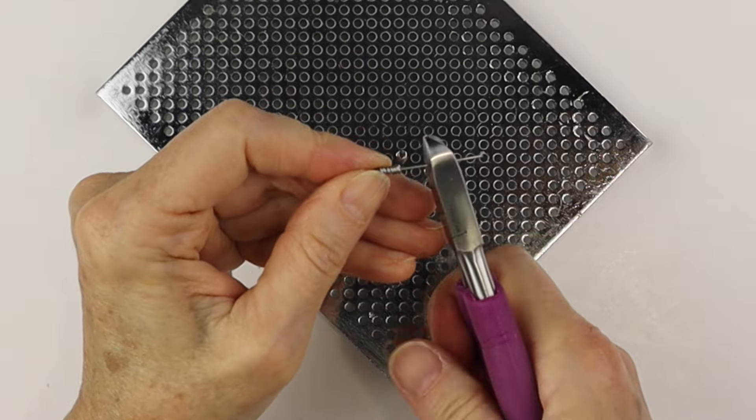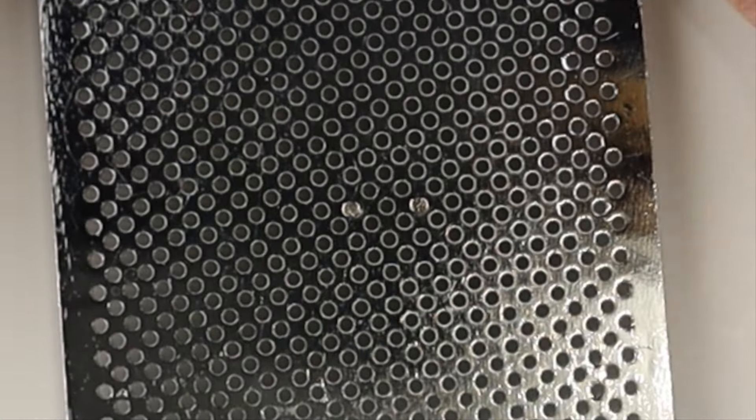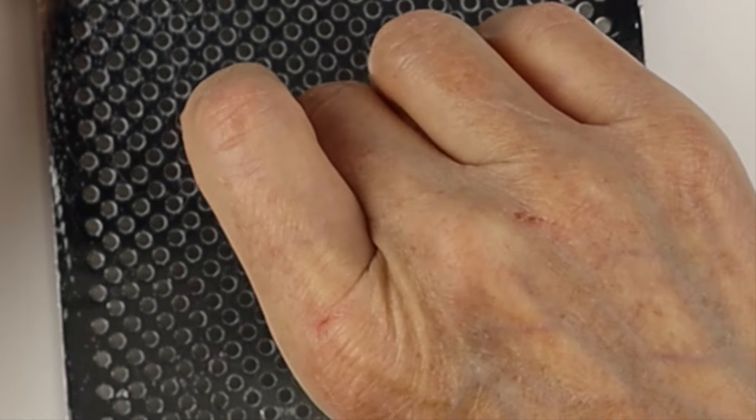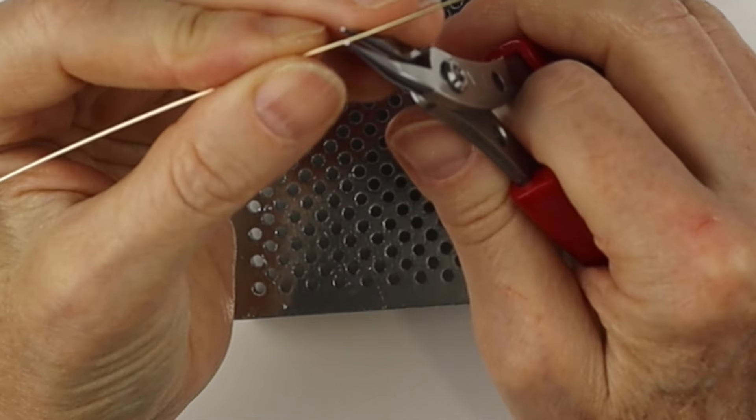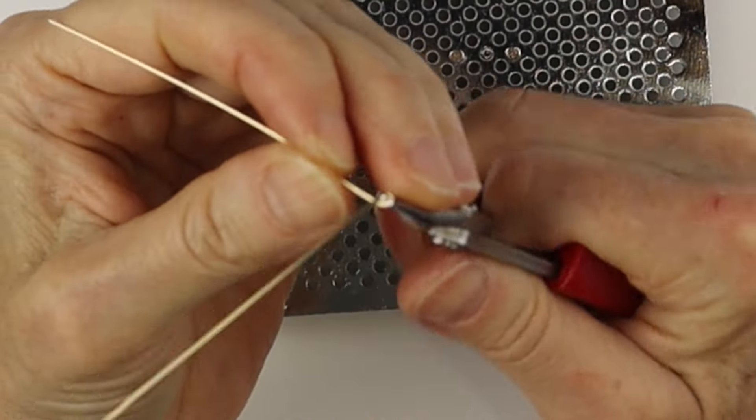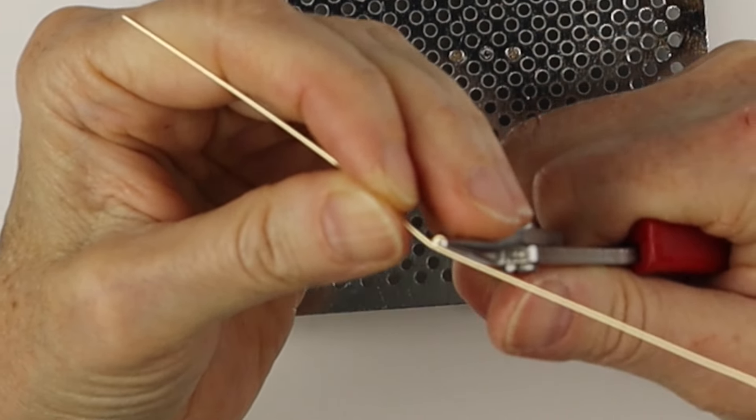Now we're going to cut it so it's not too long. It sits above the jig, and then you're just going to slip it in between two of the medium to small size pegs.